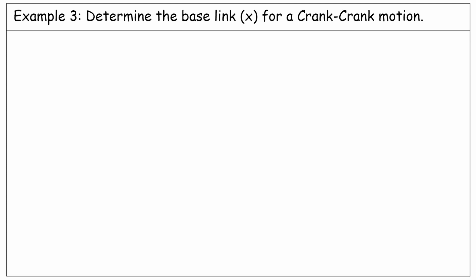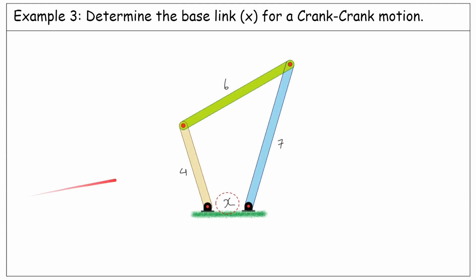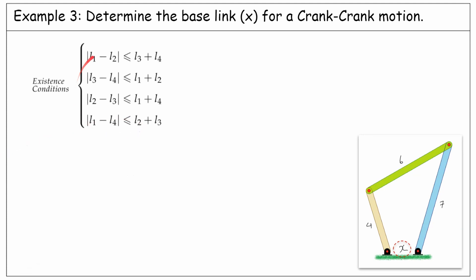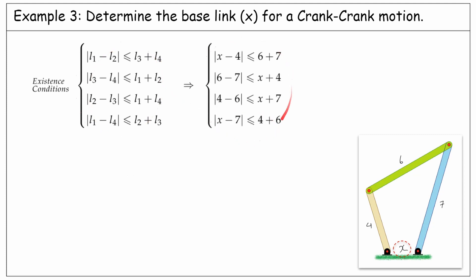After those simple examples, let's have a more complex one. In this example, the driver is 4 unit length, the coupler is 6, the follower is 7, and we need to find the range for the base link in order to have a crank-crank motion. First of all, for the existence of the four-bar linkage, we have these four conditions. If we apply each condition and take the intersection of all the requirements, we will find that for the linkage to exist, the base link must be greater than or equal to 17.